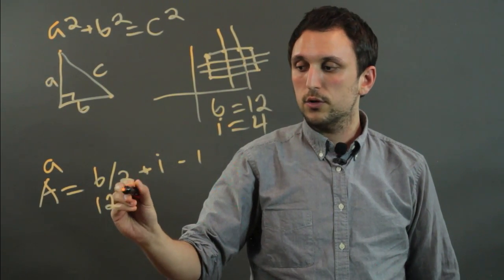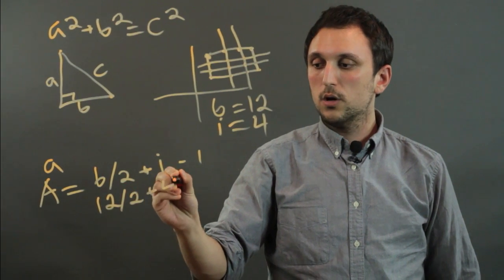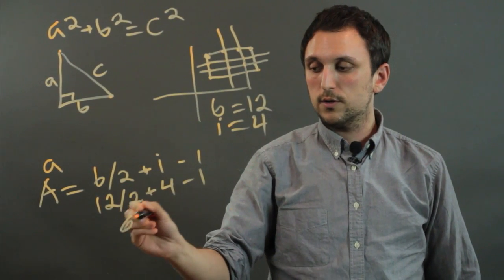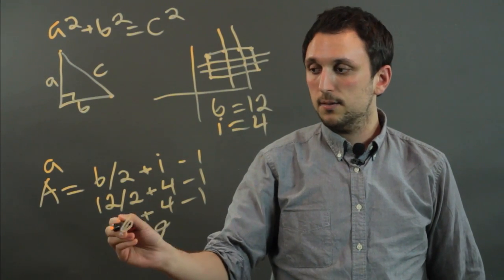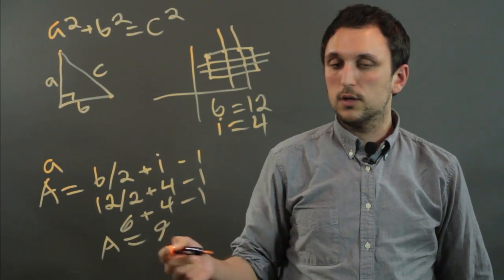We would say that area is 12 over 2, plus 4, minus 1. So, 12 over 2 is 6, plus 4, minus 1, is 10, minus 1, is 9. So, the area equals 9.